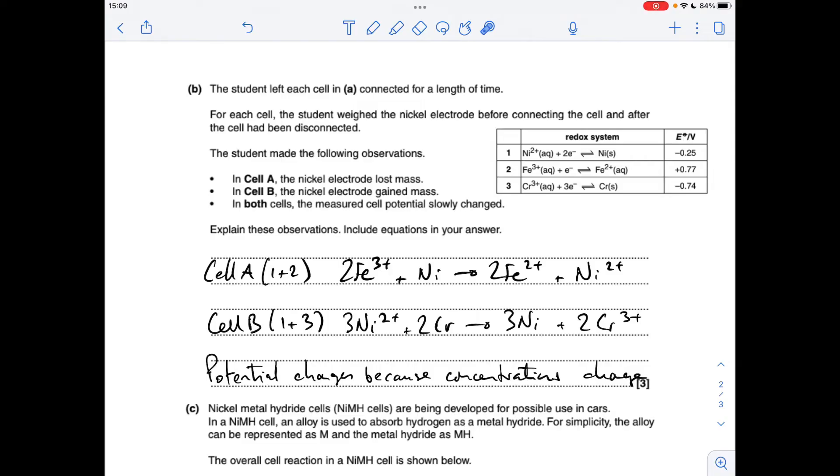Cell B based on one and three. So look at the numbers—you can see this is more positive than this one, so this runs in the forwards direction, this runs in reverse. In terms of electrons, we need to treble this one and double this one, so that gives us this equation here. And you can see that we are forming nickel in this reaction, so it's going to gain mass.